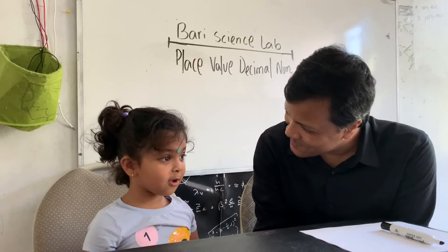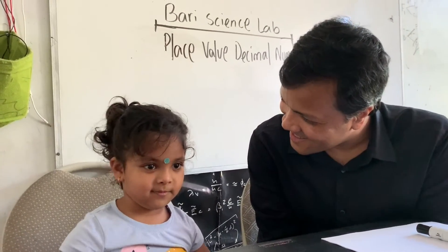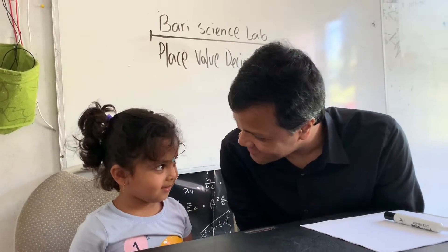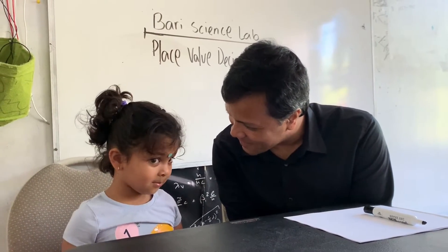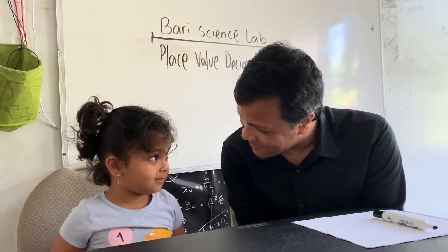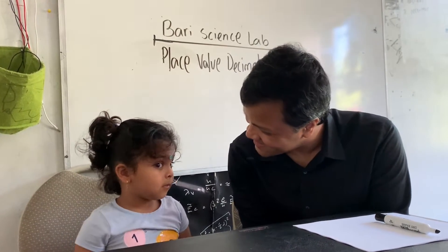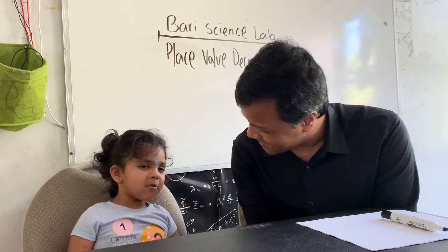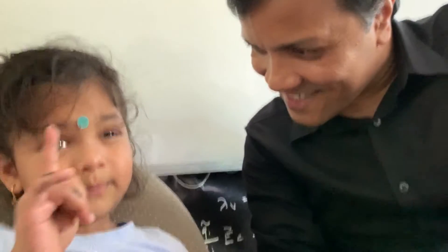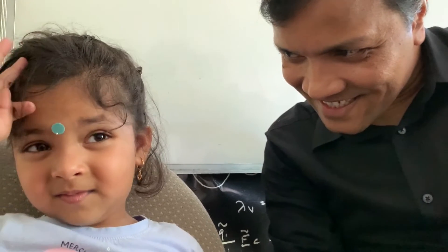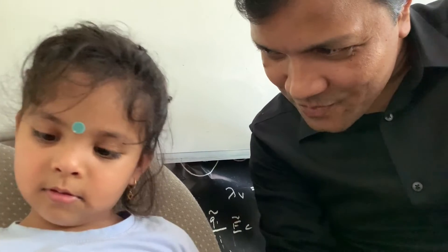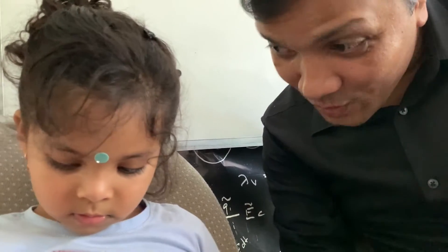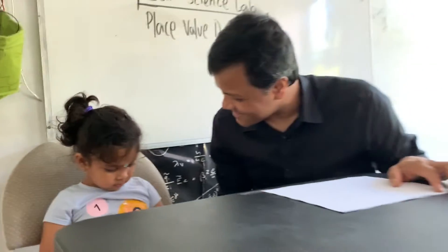Hello. Hello. What is your name? Just your idea. Are you ready to learn? No. Do you remember what you learned last time? Place value. Place value for what? Place value number. What type of numbers? Whole numbers. Let me test you on what you remember. Is that okay? No.